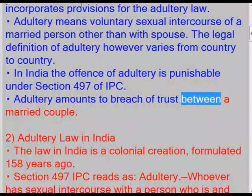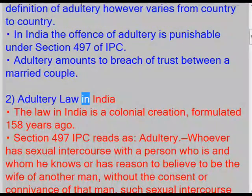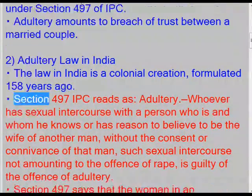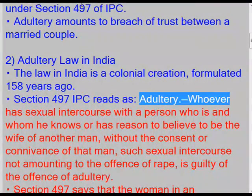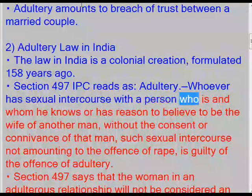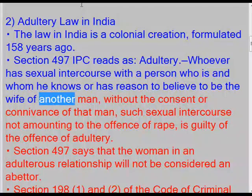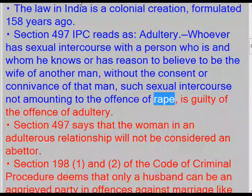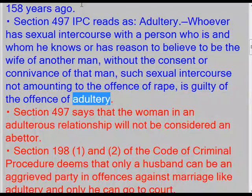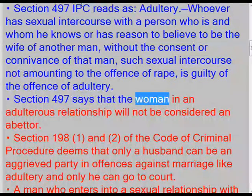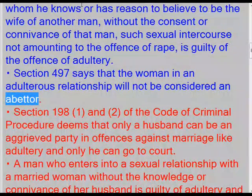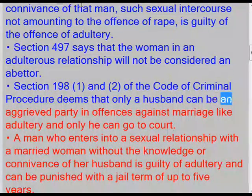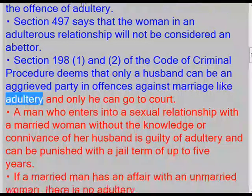Adultery amounts to a breach of trust between a married couple. The law in India is a colonial creation formulated 158 years ago. Section 497 IPC reads: whoever has sexual intercourse with a person who is, and whom he knows or has reason to believe to be, the wife of another man, without the consent or connivance of that man, such sexual intercourse not amounting to the offense of rape, is guilty of the offense of adultery. Section 497 also says that the woman in an adulterous relationship will not be considered an abettor. Section 198(1) and (2) of the Code of Criminal Procedure deems that only a husband can be an aggrieved party in offenses against marriage like adultery, and only he can go to court.